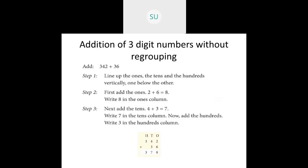What are the steps in adding three-digit numbers without regrouping? First, write the numbers aligning ones, tens, and hundreds vertically. Then first add the ones and write the result in the ones column, then add the tens and write in the tens column, then add the hundreds and write in the hundreds column. This is how you do addition of three-digit numbers without regrouping.